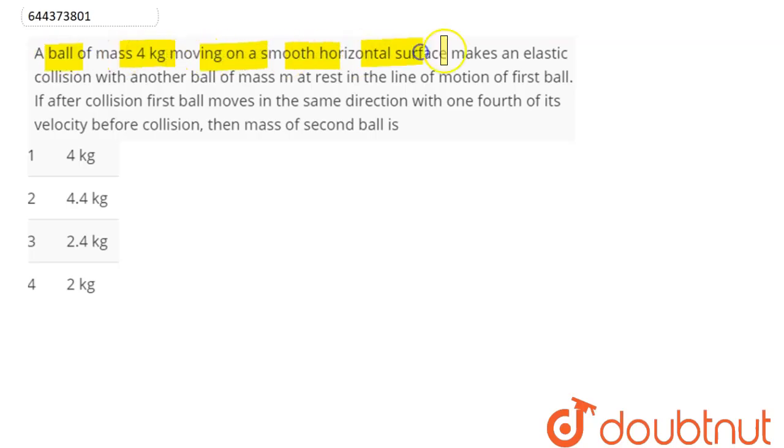moving on a smooth horizontal surface makes an elastic collision with another ball of mass m at rest in the line of motion of the first ball. If after collision the first ball moves in the same direction with one-fourth of its velocity before collision, then the mass of the second ball is